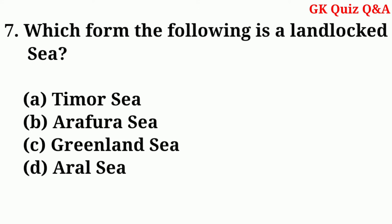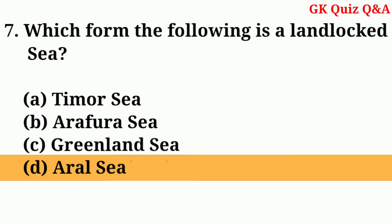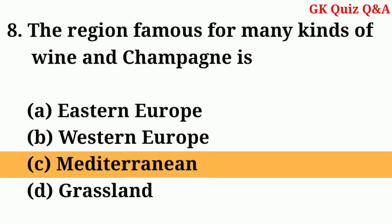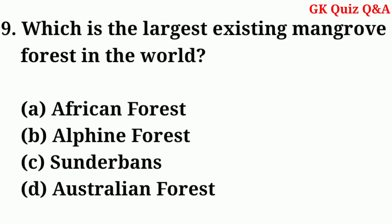Which of the following is a landlocked sea? Answer: D — Aral Sea. The region famous for making wine and champagne is? Answer: C — Mediterranean.